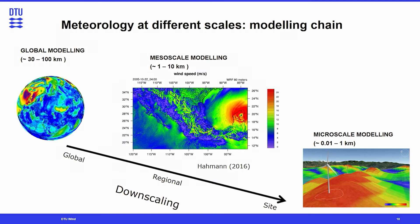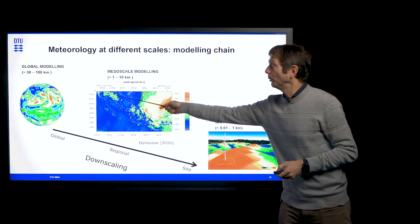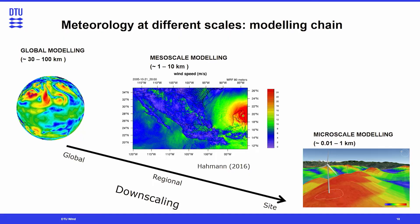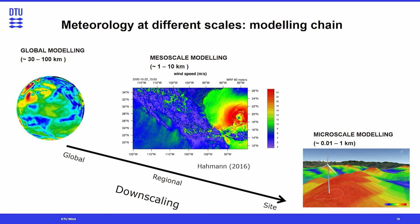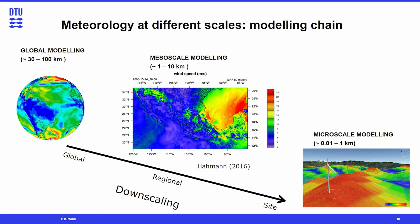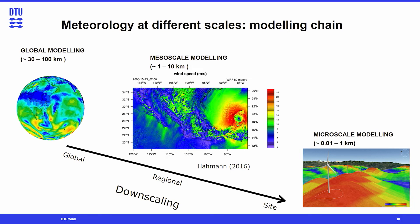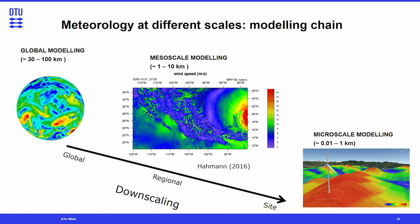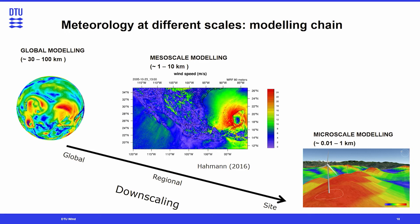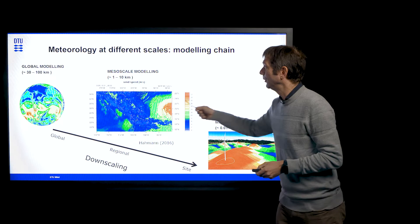This slide shows the model chain we use, which allows us to do meteorology at different scales. We start with the global scale, where weather centres around the world provide decades-long estimates of the state of the atmosphere. This is useful as a starting point, but the smallest resolved features in this kind of modelling are around 30 to 100 kilometres in size, which means we cannot use it directly in a resource assessment.